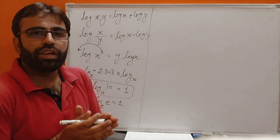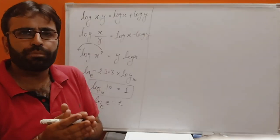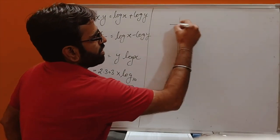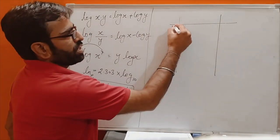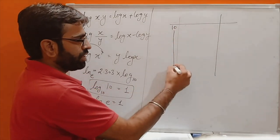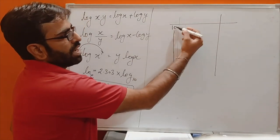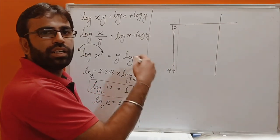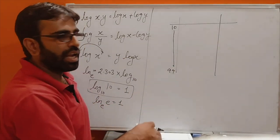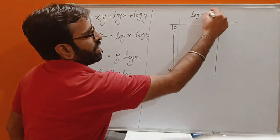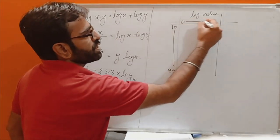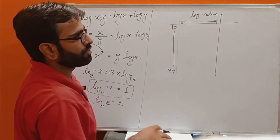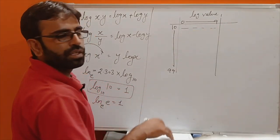Now let's discuss how to find the log values of a given number — for that you need a log table. Your log table has 3 parts. The first column has a 2-digit number starting from 10 up to 99. This is the number for which we find the log value. The second part contains the log values from 0 to 9, which represents the 3rd digit of the given number, and has 4-digit values.